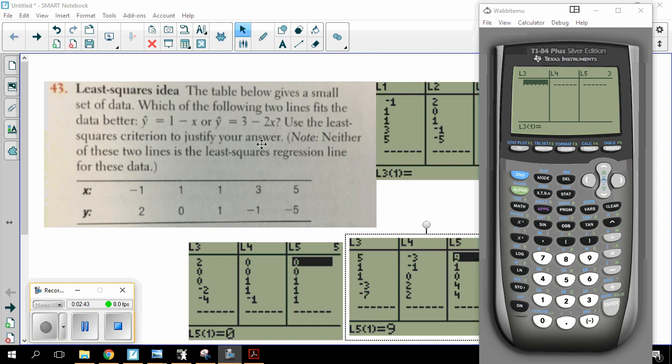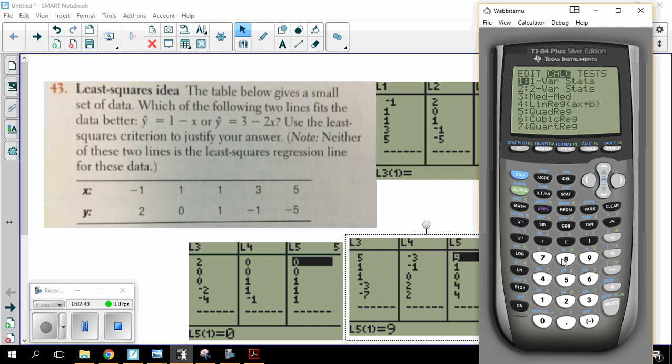So I want to find the least squares regression line, just for grins, and see how good it is. So on my home screen, I'm going to go stat calc number eight. And I'm going to plug this into Y3. So I'm going to save my regression equation into Y3.